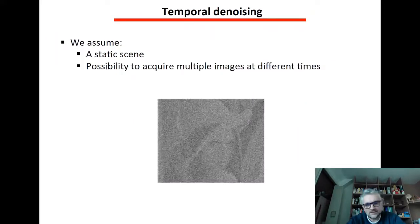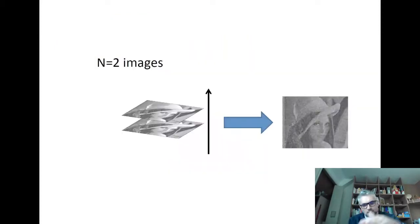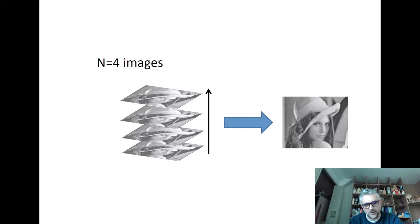So temporal denoising. Let's assume we have a static scene and we have the possibility to acquire multiple images at different times. So if we do the averaging, so summation, and then averaging out of the number of images, then we will have something that will bring denoising of the image.